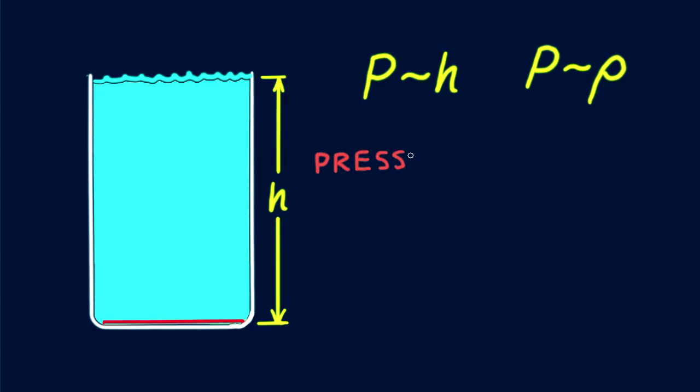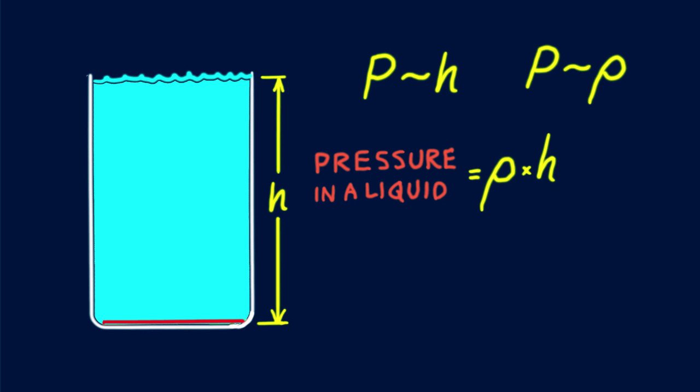Putting these ideas together, we say that pressure in a liquid equals weight density times depth, more specifically, the depth beneath the water surface. You can check the units here. If rho is in newtons per cubic meter and H is in meters, rho times H is in newtons per square meter, which is pressure.